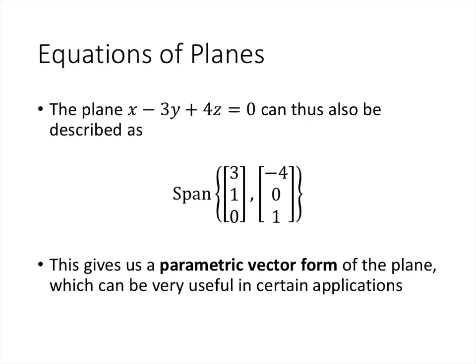So that allows us to describe this plane in what we call parametric vector form. Rather than just having this equation that tells us x - 3y + 4z = 0, but that equation doesn't directly give us any of the points on the plane, this parametric vector form does give us a way to generate lots of points on this plane. We know that all of the points on this plane look like some number times this first vector, plus some number times this second vector. And so we can generate lots of locations and points and vectors that all have to live in this plane. So it's really useful for certain applications, specifically surface integrals and some other things that we can do with planes by having this alternate description.